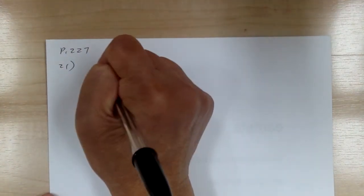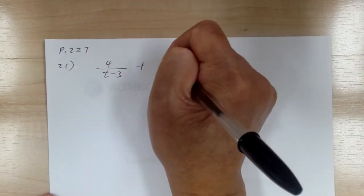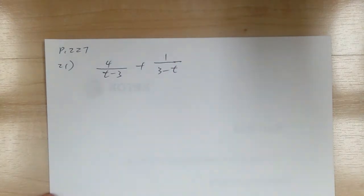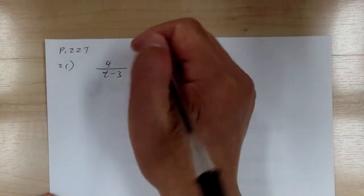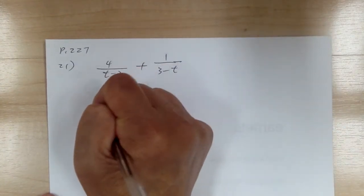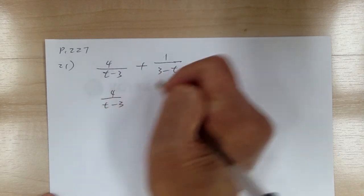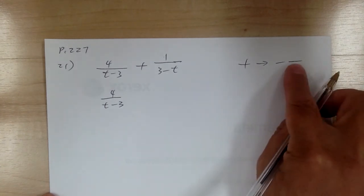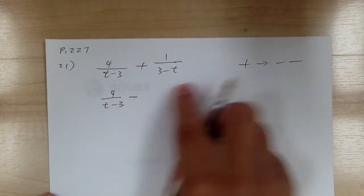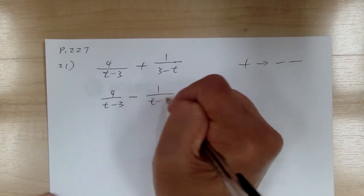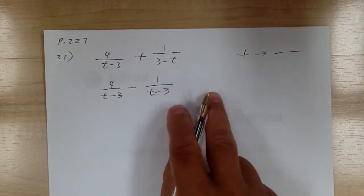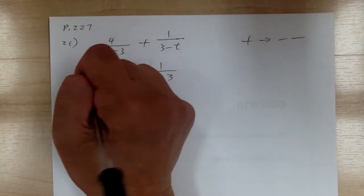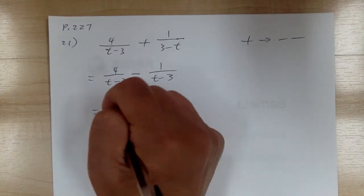Let's go to number twenty-one. You have four over t minus three, plus one over three minus t. Notice this is t minus three, and this is three minus t. Before you find the LCD, you want to switch this — the plus sign is made of two negatives. Use one negative to switch, and one to flip the subtraction. So one over three minus t becomes negative one over t minus three. Now you already have the LCD. This equals three over t minus three.